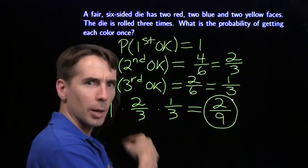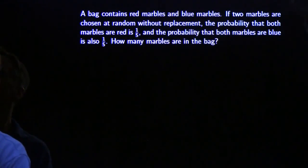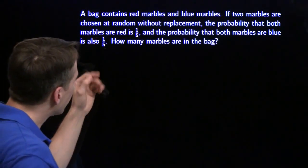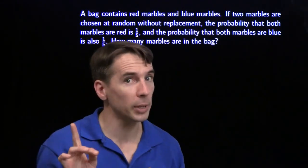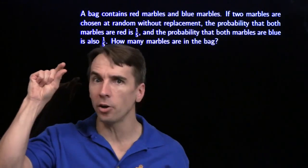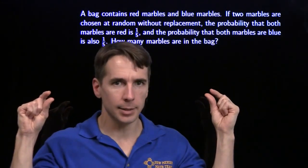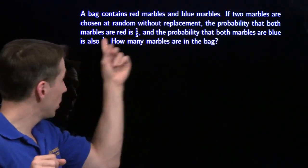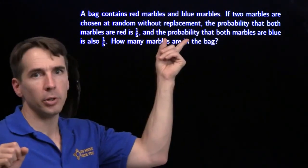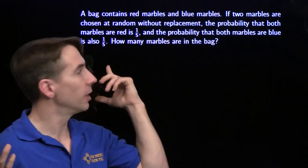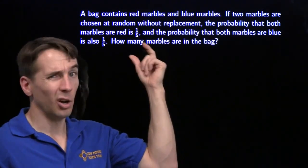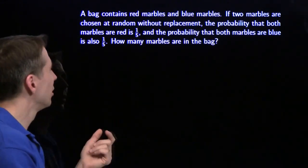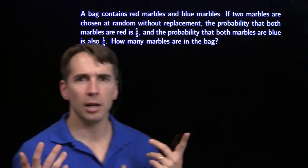We're on to the next problem. Now in this problem, we have a bag with red marbles and blue marbles. We're going to pull out two marbles, one at a time, without replacement. That means we take out one, look at its color, keep it out, take out a second one. The probability of getting two reds is one-fifth, the probability of getting two blues is also one-fifth. We want to figure out how many marbles are in the bag. And all we're given is these probabilities.